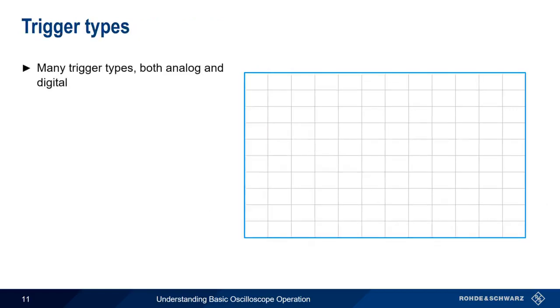There are many different types of triggers, and triggers can be both analog and digital. Modern scopes can trigger on things like pulse widths, runts, glitches, etc. However, the most common form of triggering is the so-called edge trigger.